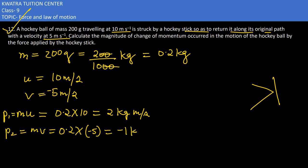So here in this case, change in momentum would be final minus initial. p2 minus p1 would give you change in momentum.